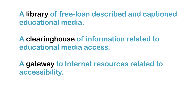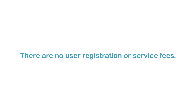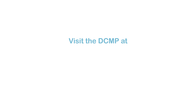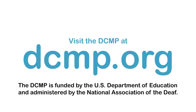The DCMP is a gateway to internet resources related to accessibility, and a set of guidelines for adding descriptions and captions to media. There are no user registration or service fees. Visit the DCMP at DCMP.org. The DCMP is funded by the U.S. Department of Education and administered by the National Association of the Deaf.